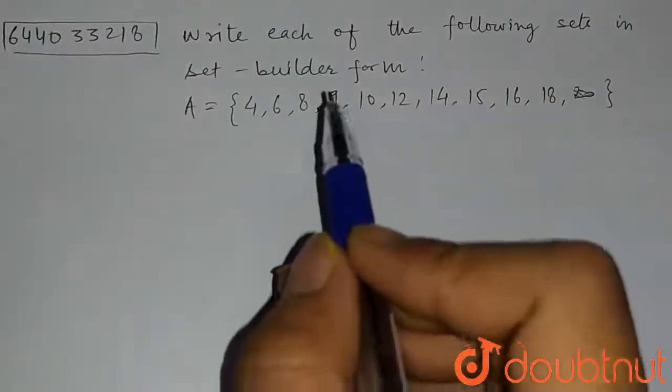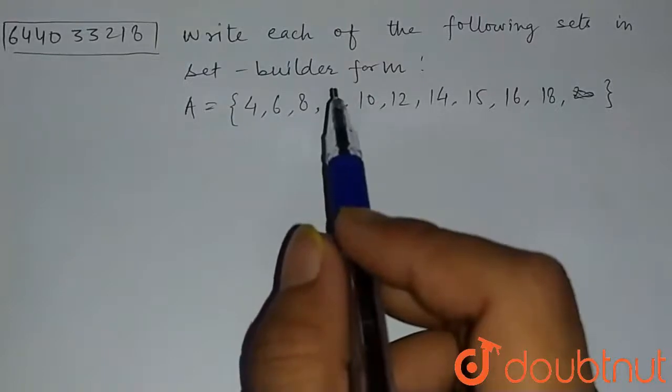So today's question is: write each of the following sets in set builder form.